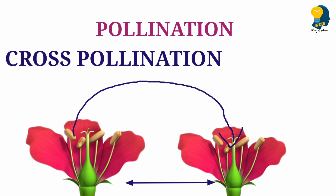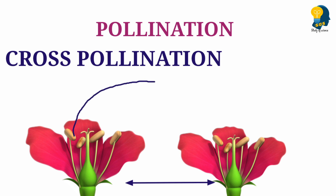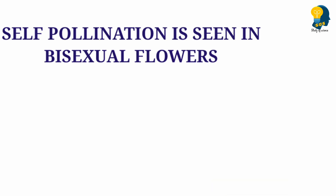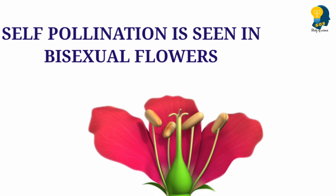Under cross-pollination, transfer of pollen grains between one flower and another flower takes place. When I say self-pollination, the pollination happens within the same flower. When I say cross-pollination, the pollination happens between two flowers. Also, you have to remember that self-pollination takes place only in the bisexual flower.